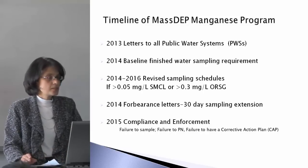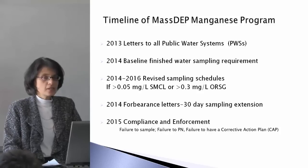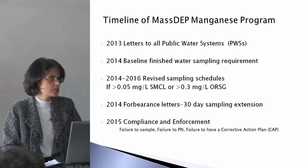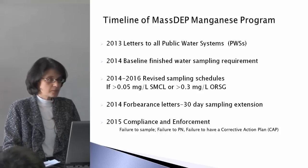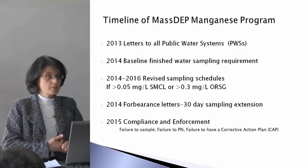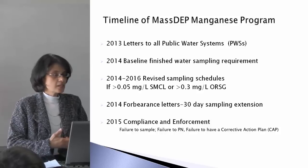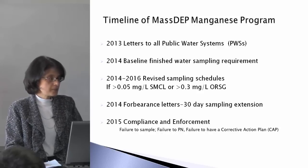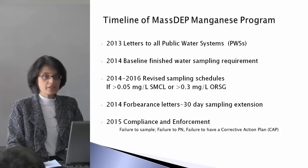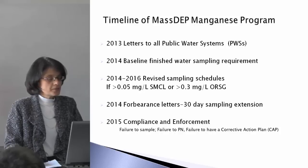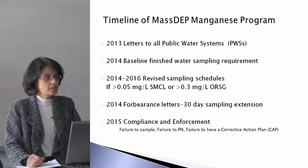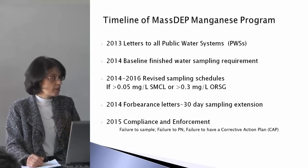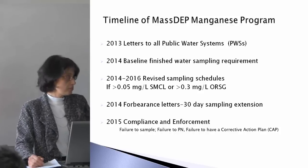I'd like to briefly review what's happened over the past year or so with the manganese program. It was only just over a year ago that the first letters went out — actually late in 2013, around October. All public water supplies in Massachusetts were notified that there were going to be some new requirements for monitoring and reporting for manganese. Then in 2014, baseline finished water sampling was required from public water supplies, so we know the starting point. What I'm going to talk about in a moment is what happened when those baseline sample results showed that some public water supplies were over 0.3, or over 0.1, or over 0.05, because that changed the monitoring requirements too.